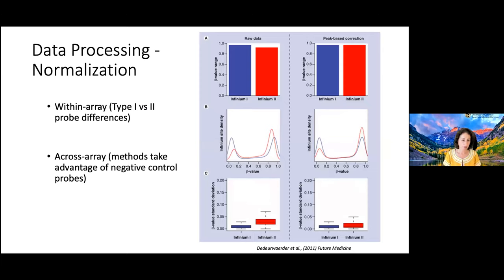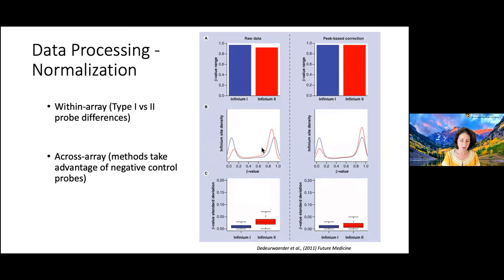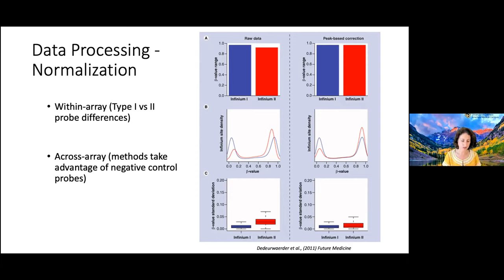In terms of data processing, like many arrays, you need normalization. There's within-array normalization because the Infinium platform has Type I and Type II probes — Type II probes have lower signal quality and don't line up as well. Normalization makes them line up better and reduces variability, giving a fuller range of methylation. Then there's cross-sample normalization. Many methods take advantage of negative control probes, which is a nice advantage of these arrays.